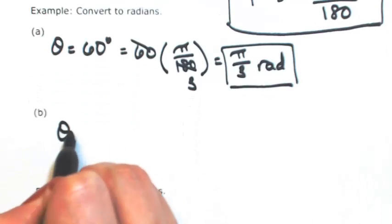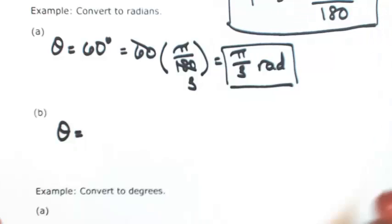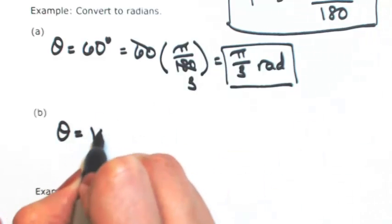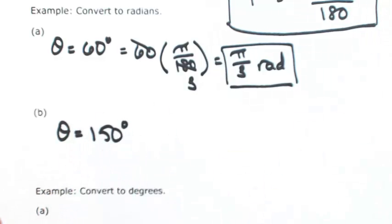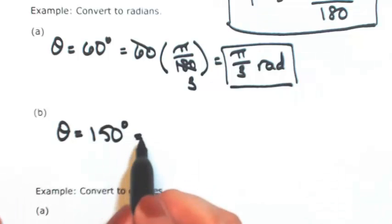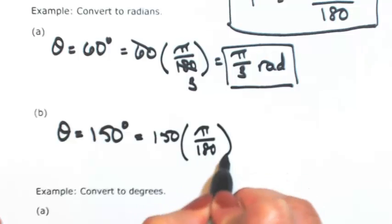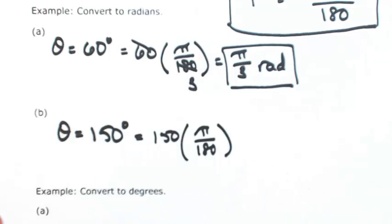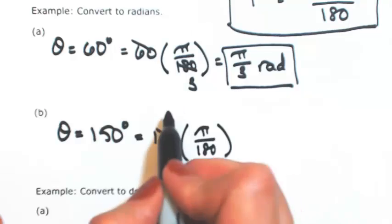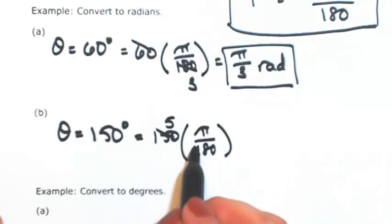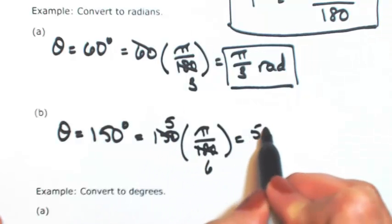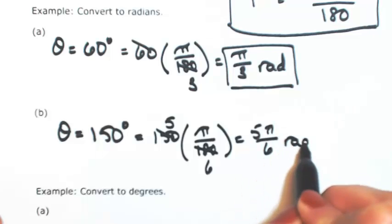Let's do another one. Let's say that theta is 150 degrees. So I'm replacing a degree with pi over 180, canceling as needed. So let's see, I think we can take a 30 out of both of these. So 30 into 150 would be 5, 30 into 180 would be 6, so 5 pi over 6 radians.